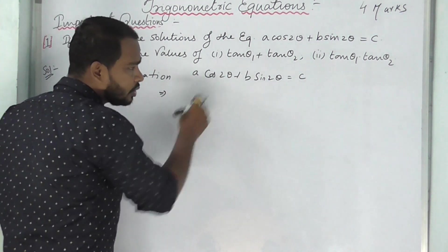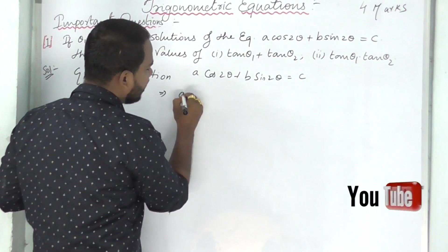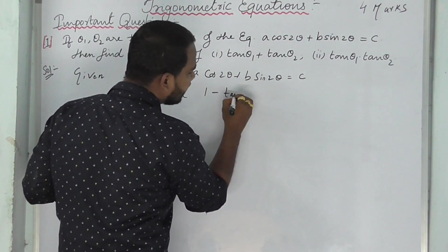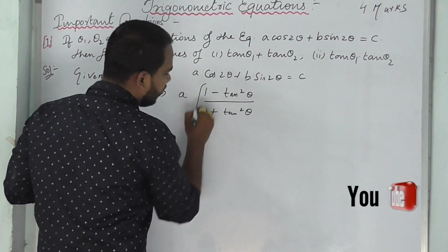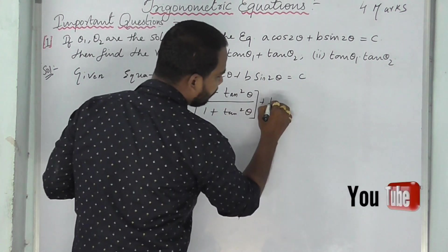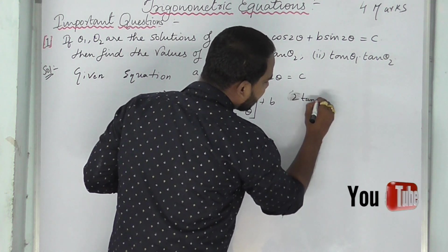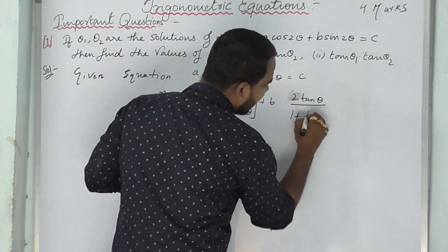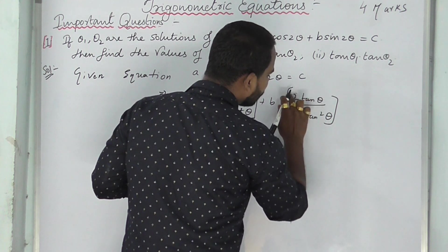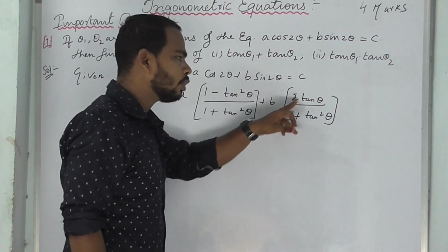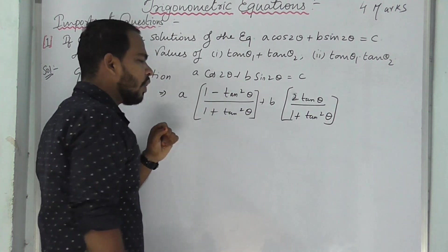We use the double angle formulas: cos 2θ equals (1 minus tan²θ) by (1 plus tan²θ), and sin 2θ equals (2 tan θ) by (1 plus tan²θ). Substituting into A cos2θ plus B sin2θ equals C: A times (1 minus tan²θ)/(1 plus tan²θ) plus B times (2 tanθ)/(1 plus tan²θ) equals C.